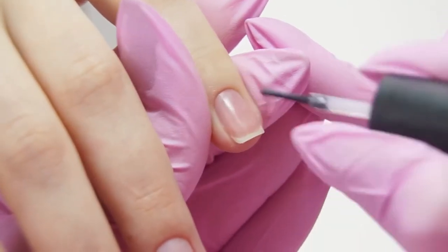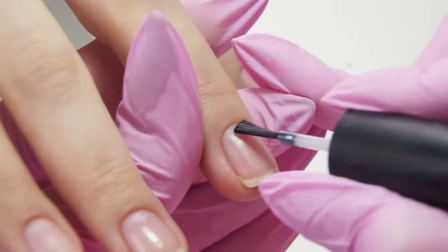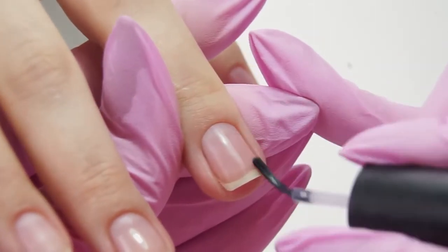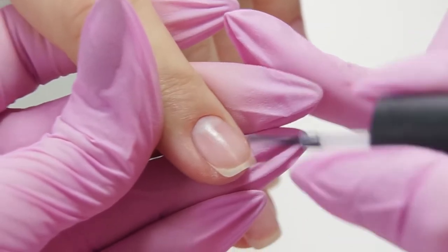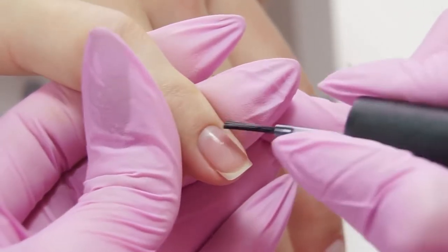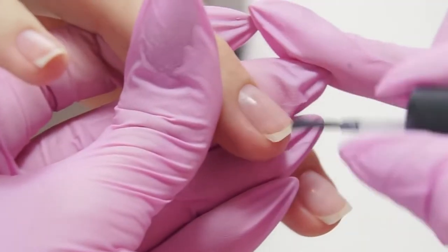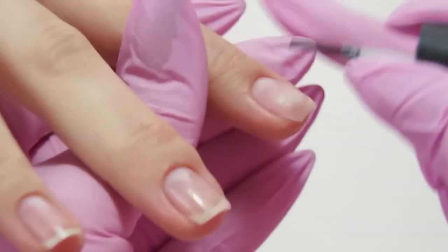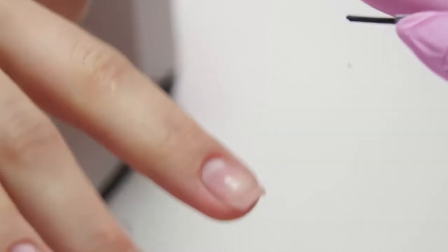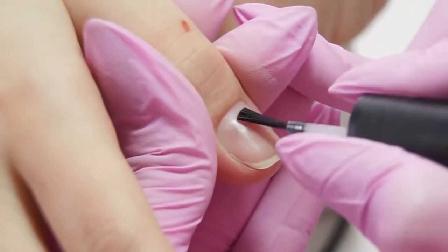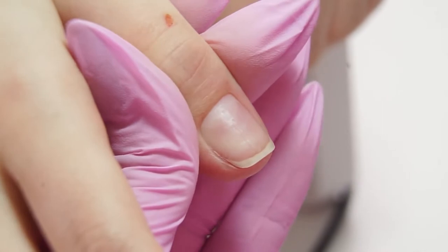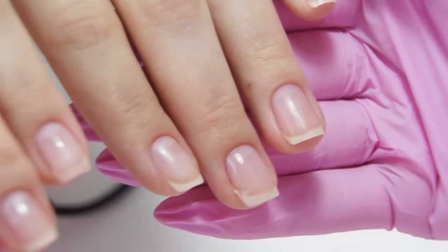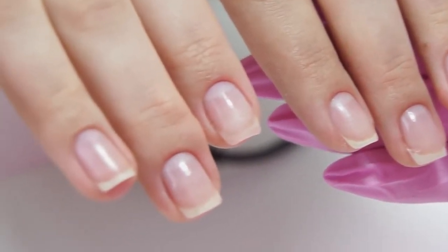Now I'm applying an acid-free primer. This product provides a better bonding between the nail and the coating. The primer acts as a double-sided adhesive tape. I'm grabbing a small amount of the product to avoid overlaying, since it can cause lifting. One squeezed out brush is enough for a few nails. Our nails are ready for the base coat.